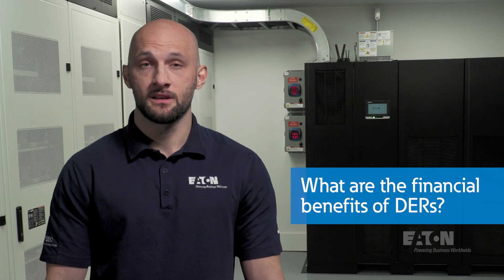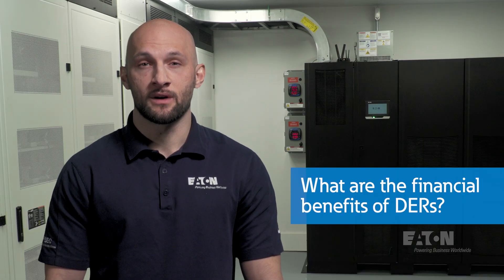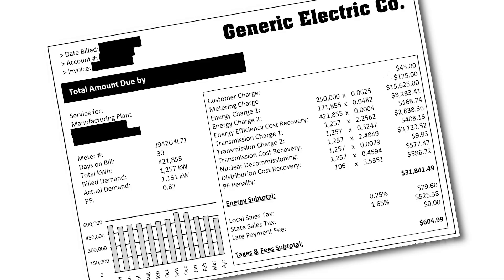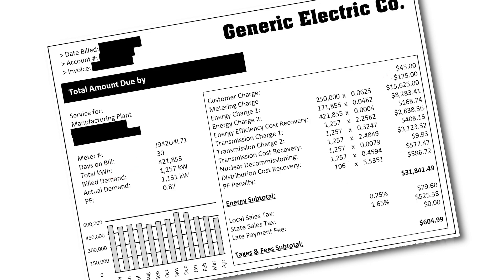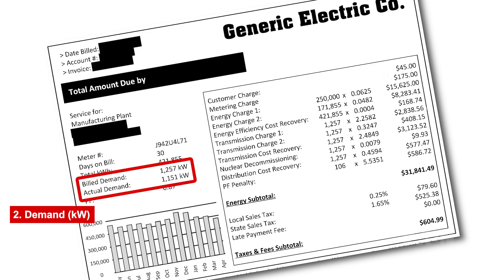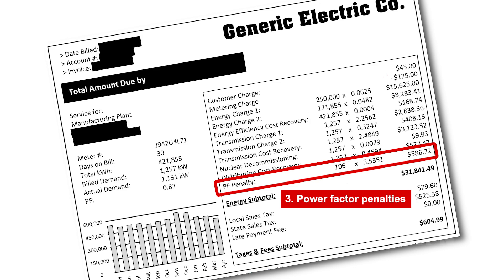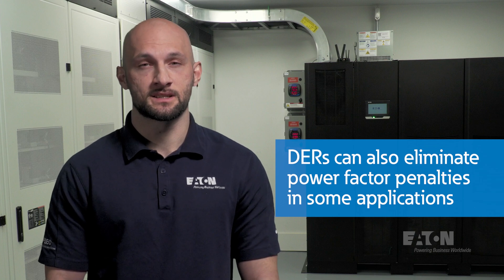Beyond the financial benefits of resilience, DERs offer direct utility bill savings. The utility bill has four components: energy, measured in kilowatt hours; demand, measured in kilowatts; power factor penalties; and taxes. DERs offer the most opportunity for savings with the first two parts of the bill — energy and demand — and they have the capability to eliminate power factor penalties in some applications.